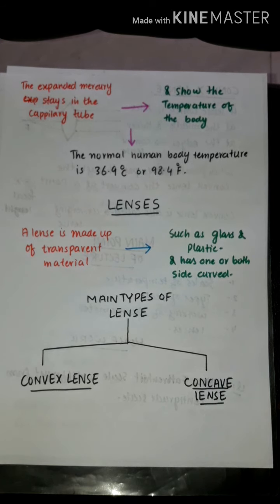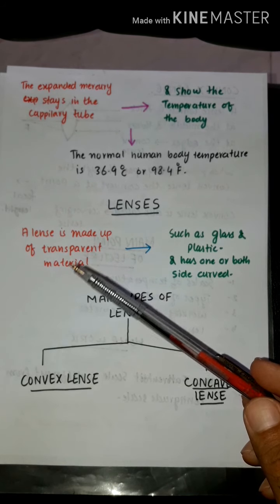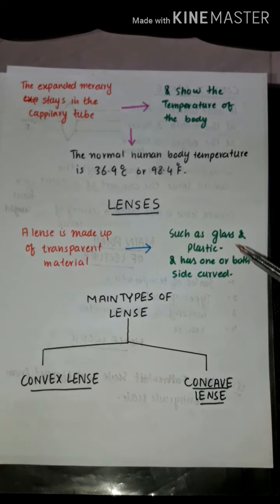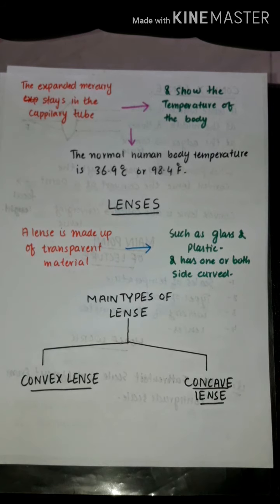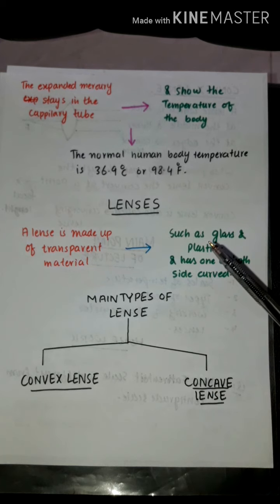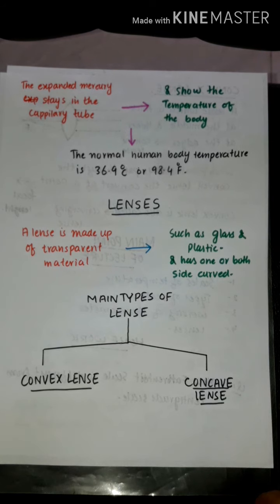Now we come to the next topic: lenses. What is a lens? A lens is made up of transparent material such as glass or plastic, and has one or both sides curved. There are two main types of lenses: convex lens and concave lens.